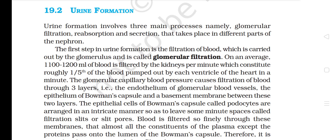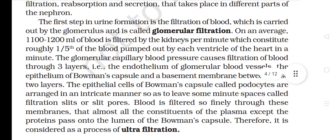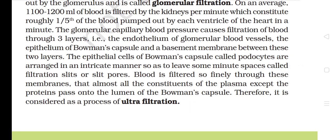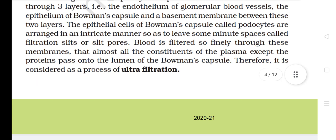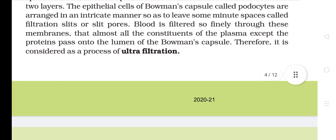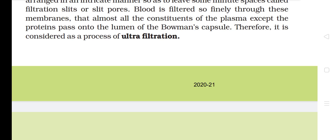Section 19.2: Urine Formation. Urine formation involves three main processes: glomerular filtration, reabsorption, and secretion, taking place in different parts of the nephron. The first step is filtration of blood by the glomerulus — glomerular filtration. On average, 1100–1200 ml of blood is filtered by the kidneys per minute, constituting roughly one-fifth of the blood pumped by each ventricle per minute. Glomerular capillary blood pressure causes filtration through three layers: the endothelium of glomerular blood vessels, the epithelium of Bowman's capsule, and a basement membrane between them. Epithelial cells of Bowman's capsule called podocytes leave minute spaces called filtration slits or slit pores.